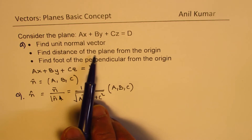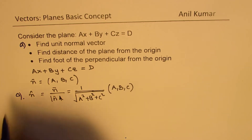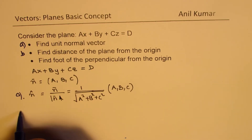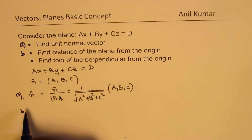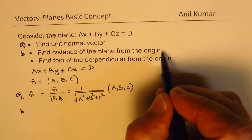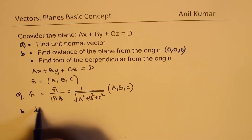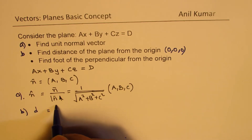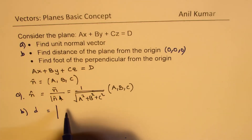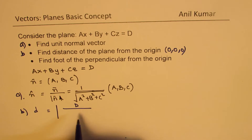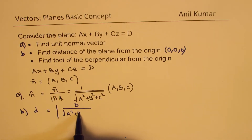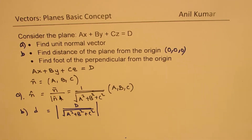Now to find the distance of the plane from the origin — call this part B — from the origin (0, 0, 0), the distance D equals the absolute value of D divided by the square root of A squared plus B squared plus C squared. That becomes the distance.